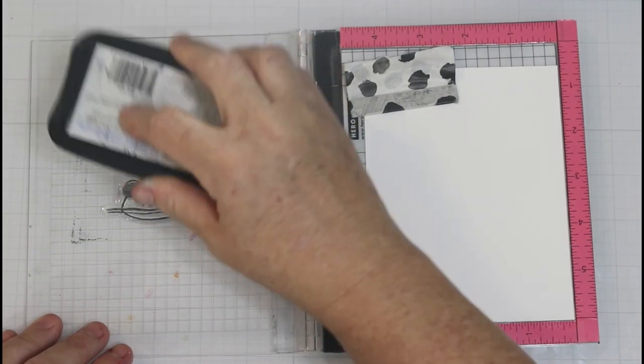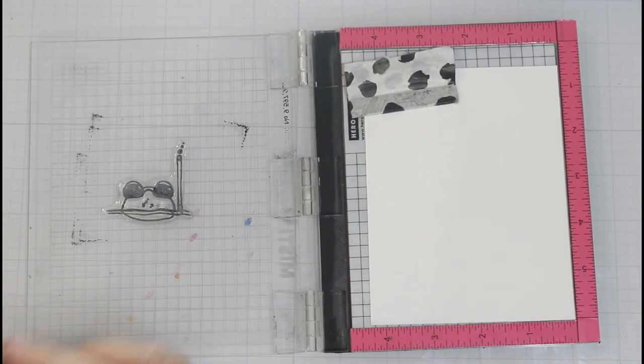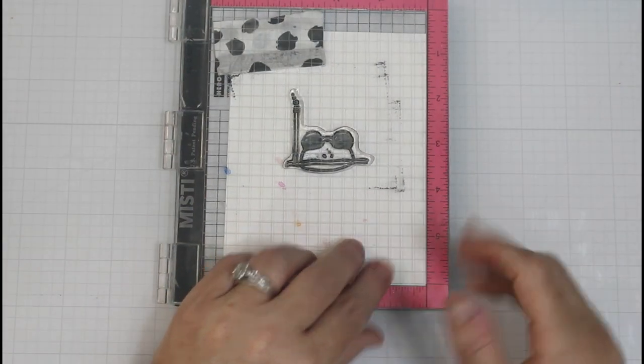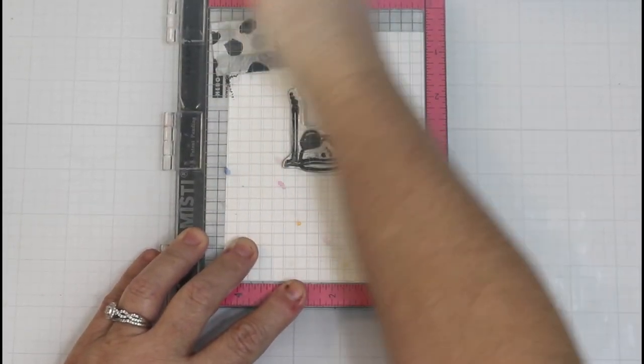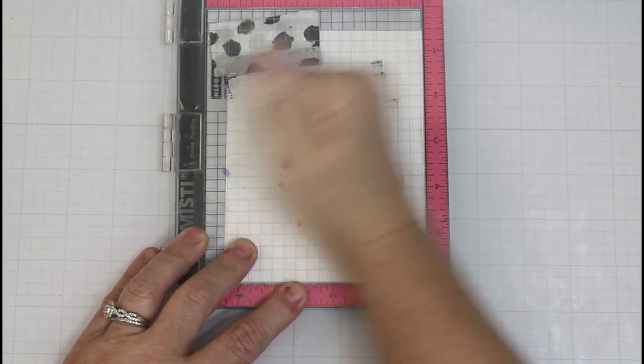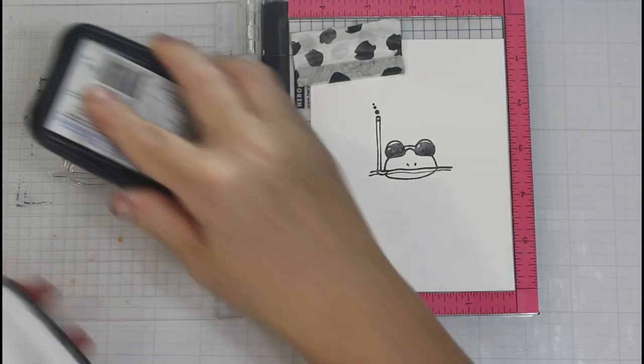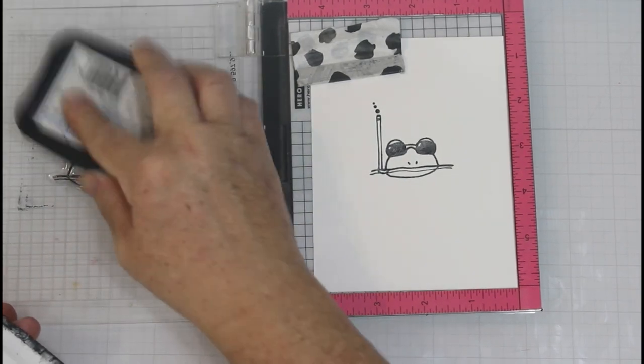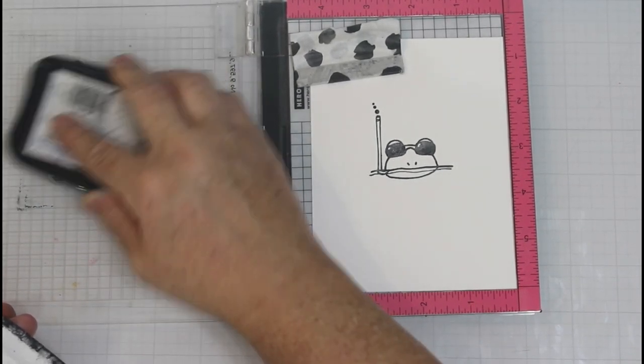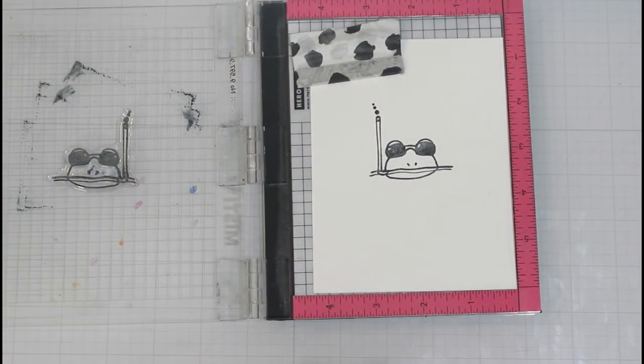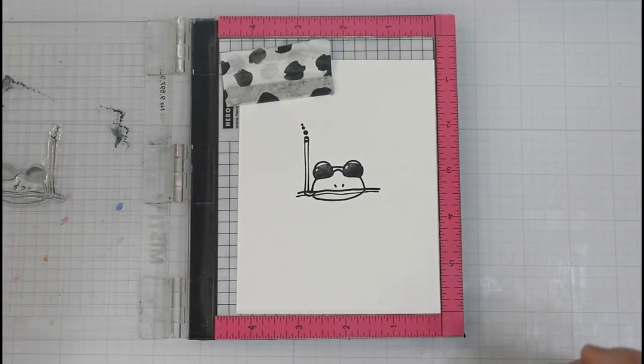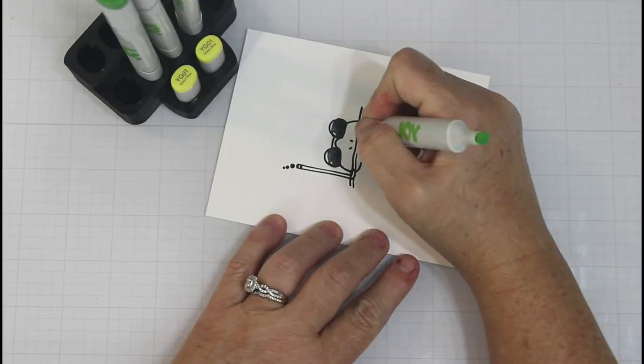So here's that reveal. Now I am bringing in the little frog that's got the snorkel from the Beach Frog stamp set. I am stamping that with Memento Tuxedo Black ink and I'm stamping that twice just because I want a really dark crisp line. You could absolutely go over that again with a fine liner. I didn't feel the need to do that.